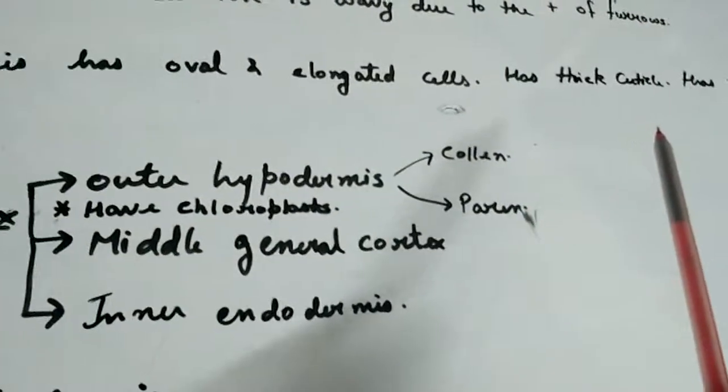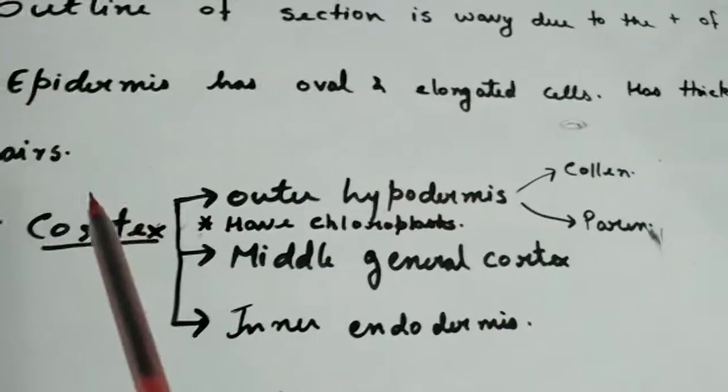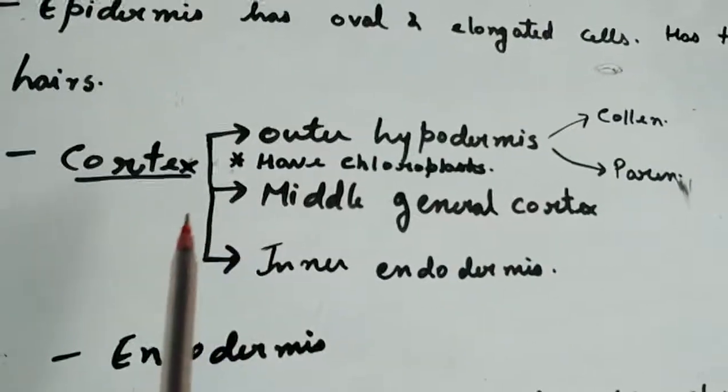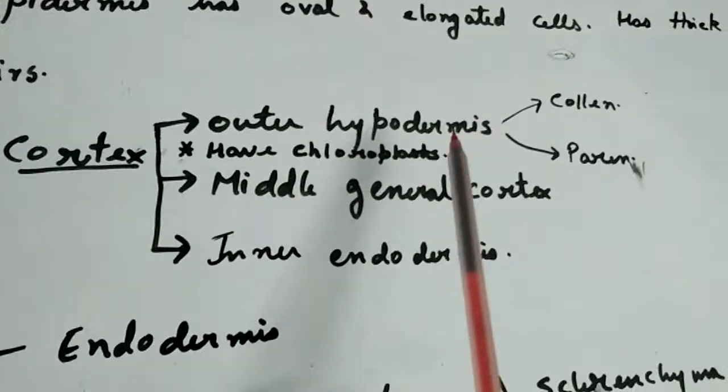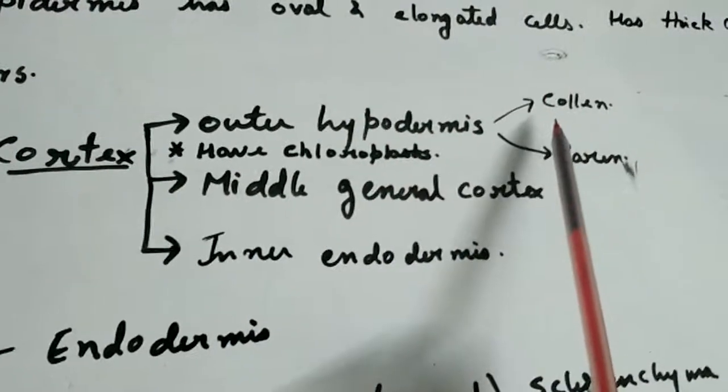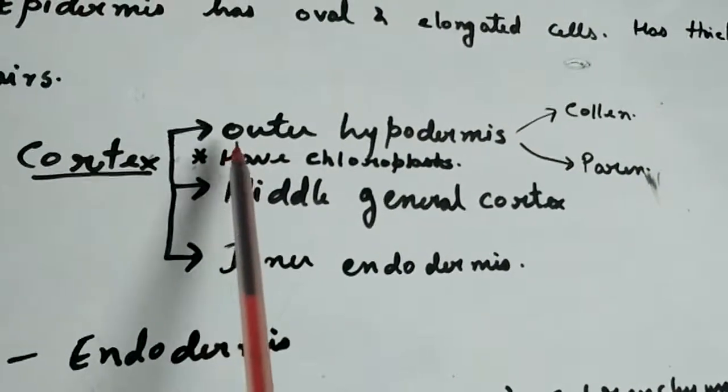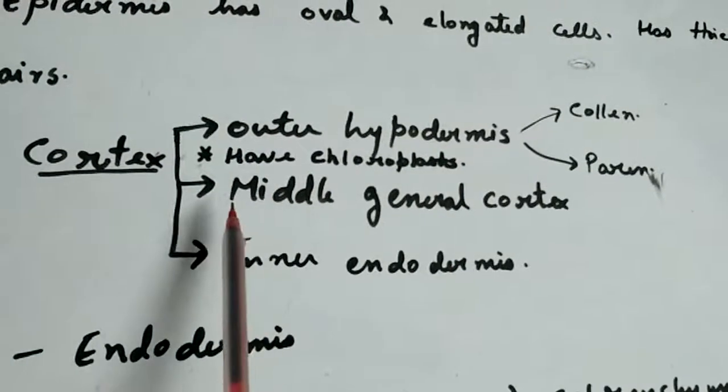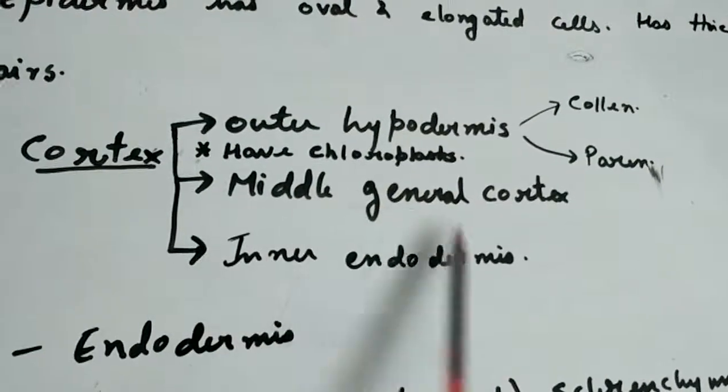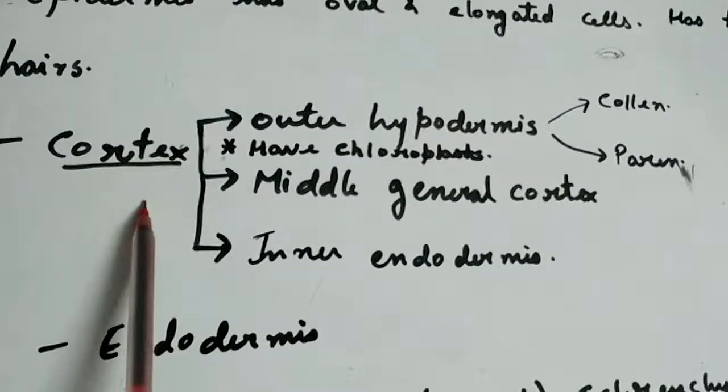The cortex is divided into three main parts: outer hypodermis, which is both collenchymatous as well as parenchymatous, and hypodermis has chloroplasts; middle general cortex; and inner endodermis. So cortex is divided into three main regions.